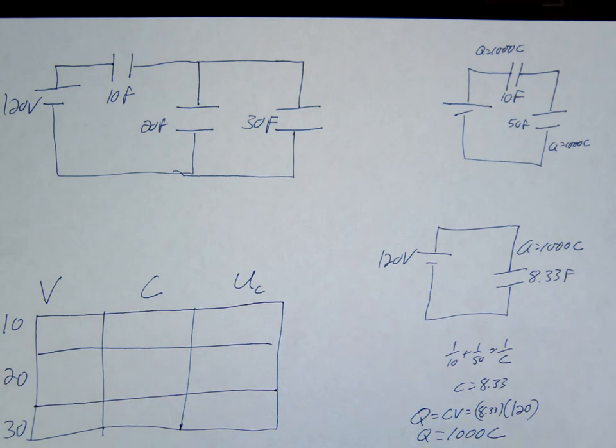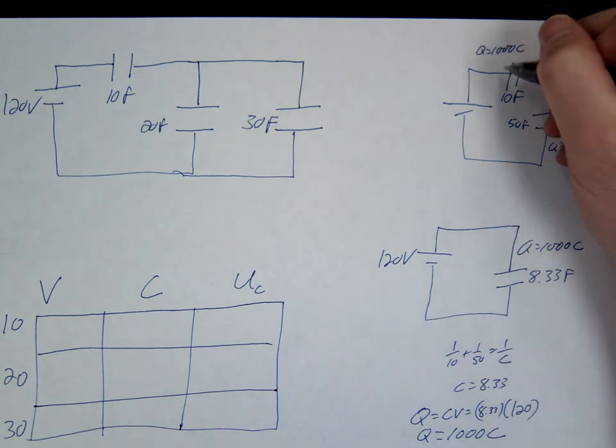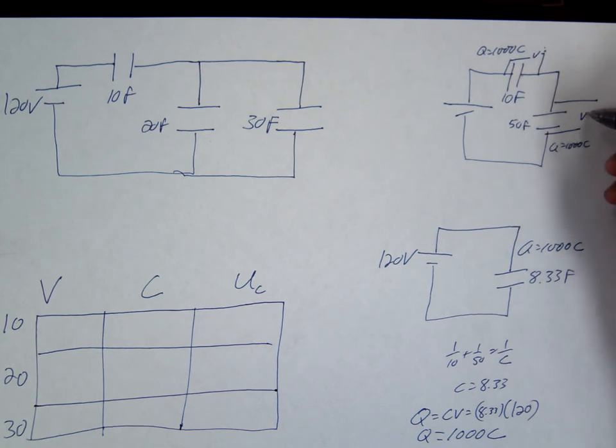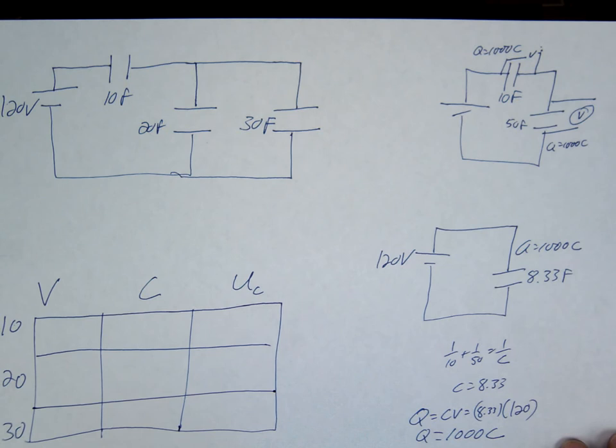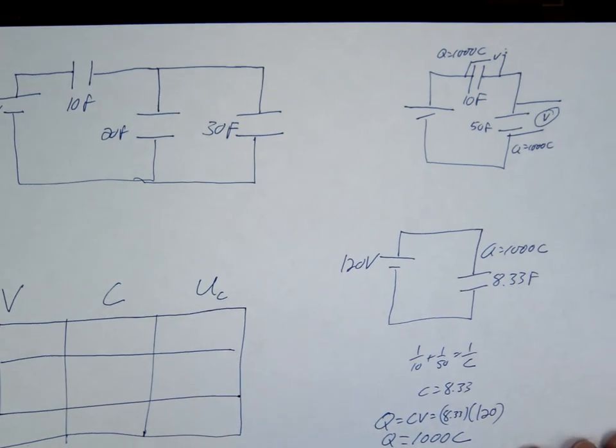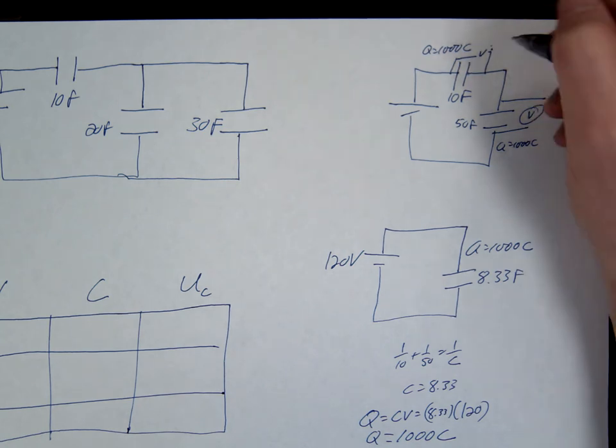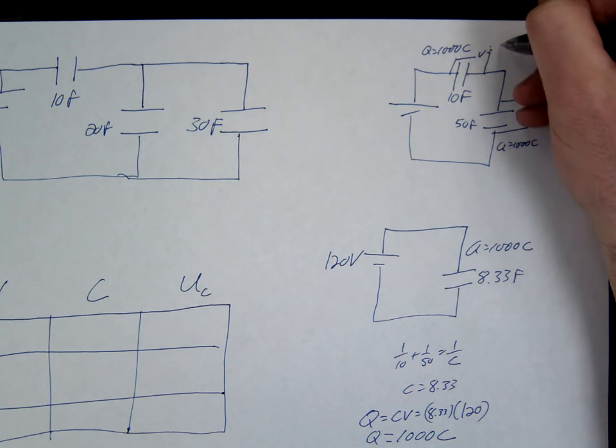So what are we missing here? The voltage across them. So we're now missing the voltages. So we're going to find the voltage across each. Okay, so we'll use V equals Q over C.